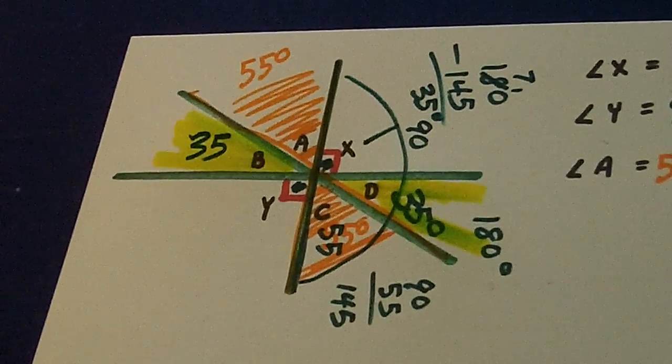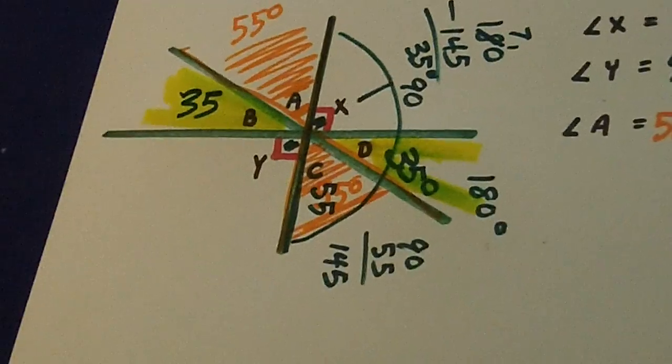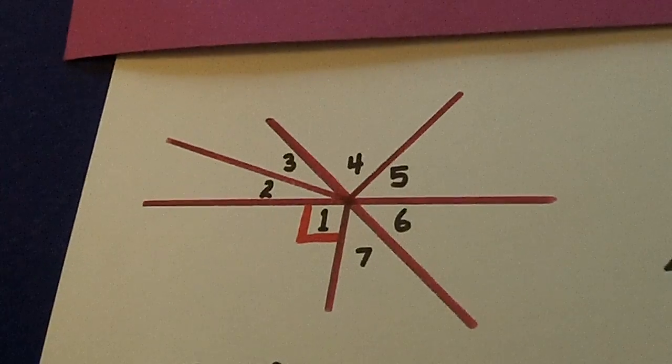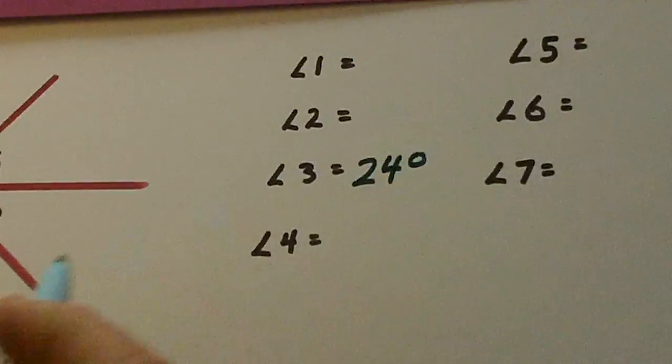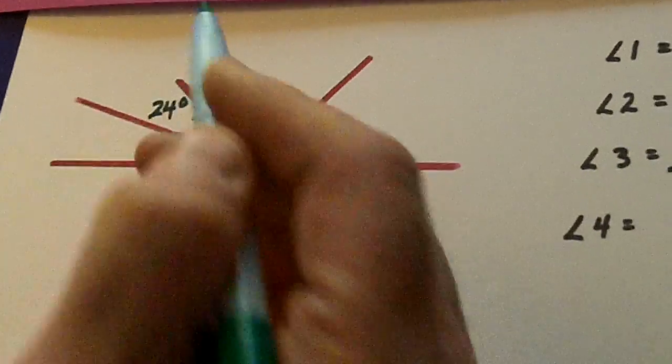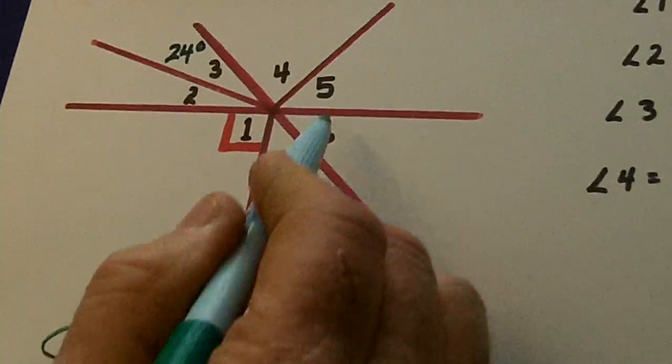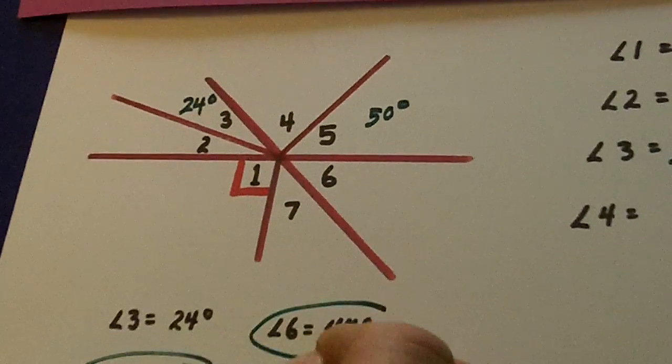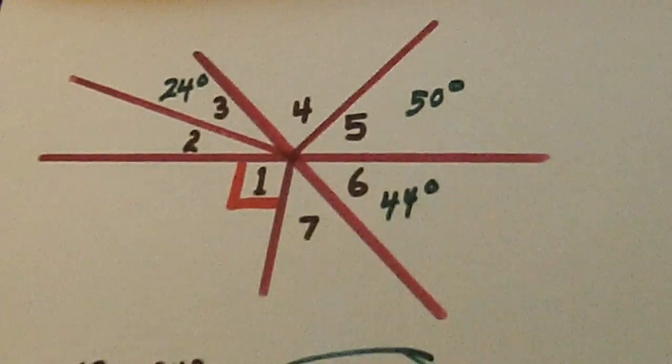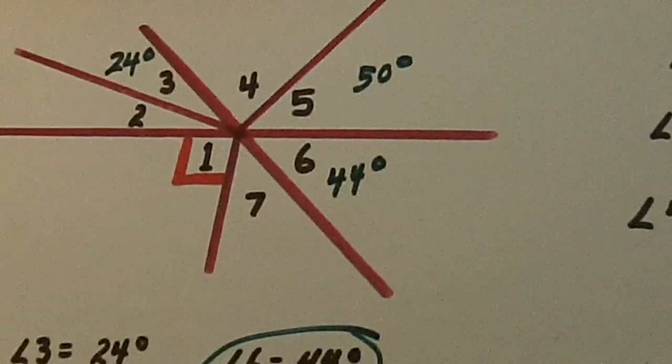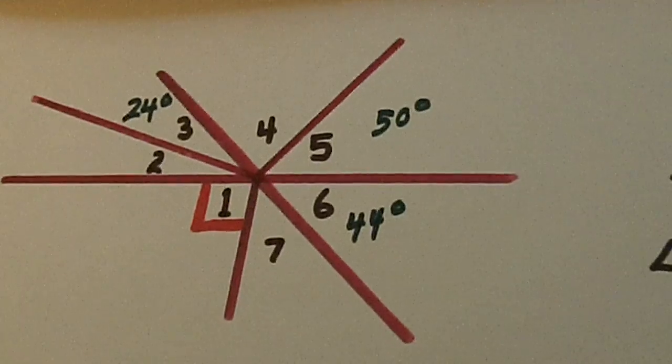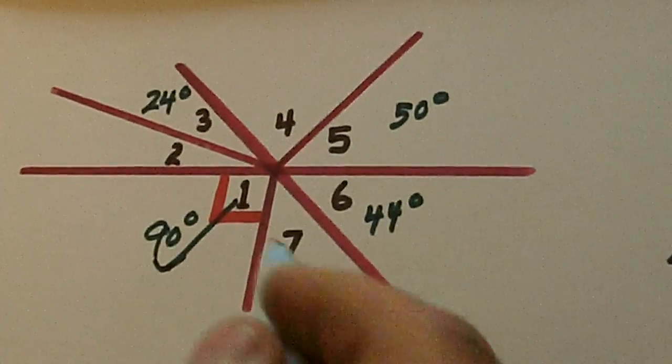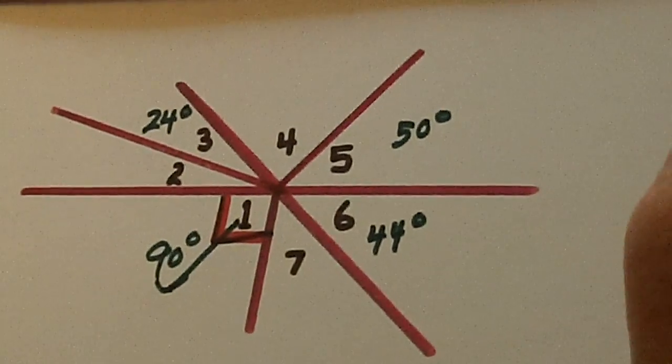Now let's come down here to this one. And I think the test is going to give us these. Angle 3 is 24 degrees. Angle 5 is 50 degrees. Angle 6 is 44 degrees. Now we need to guess the rest using our logic. Well, which is easiest? Number 1 is 90 degrees because it is a right angle.